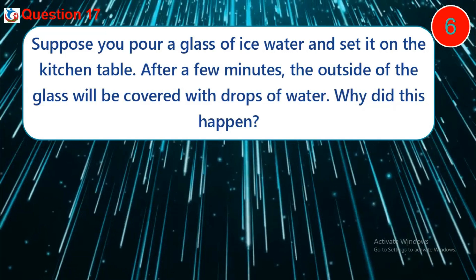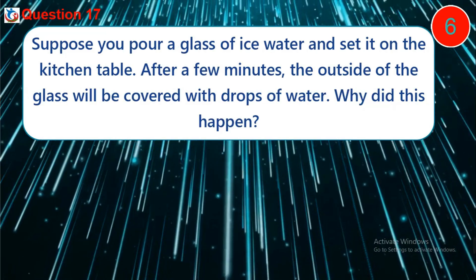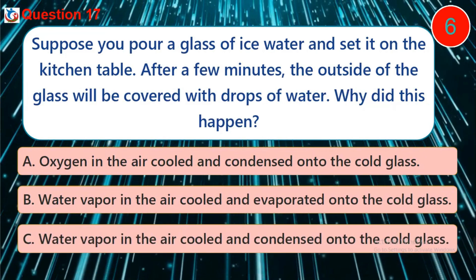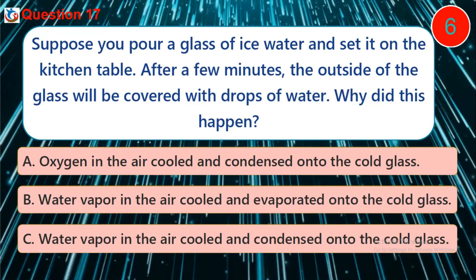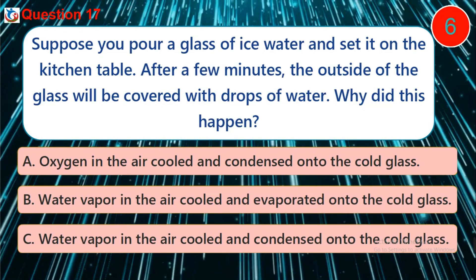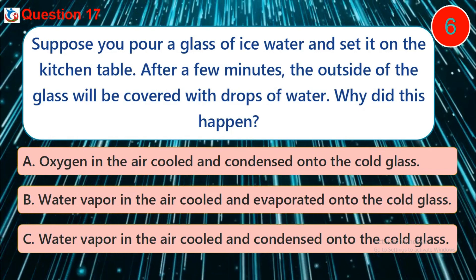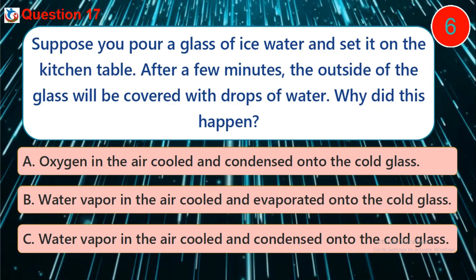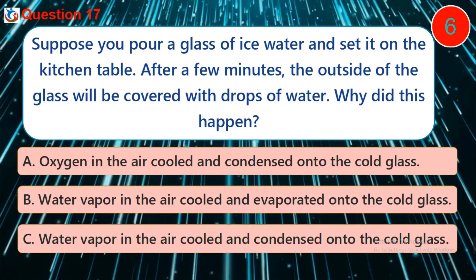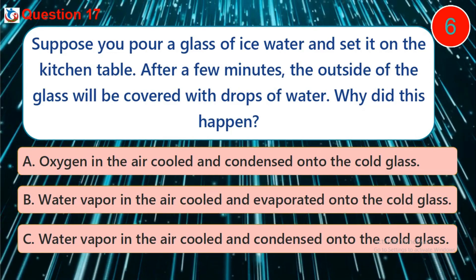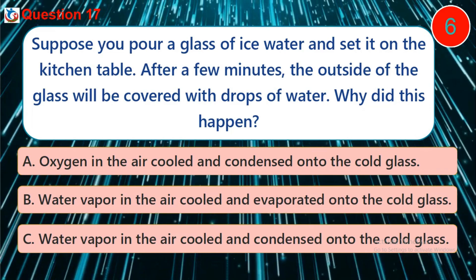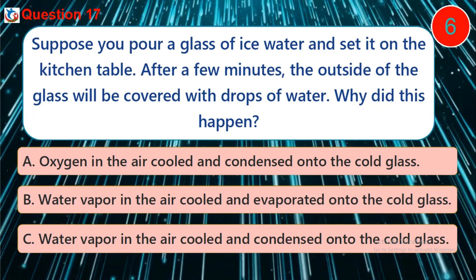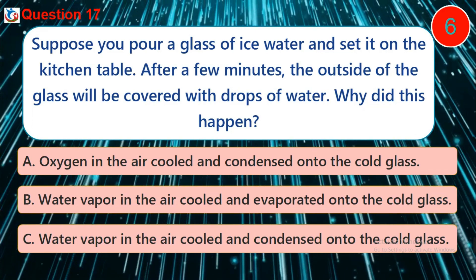Question 17. Suppose you pour a glass of ice water and set it on the kitchen table. After a few minutes, the outside of the glass will be covered with drops of water. Why did this happen? A. Oxygen in the air cooled and condensed on the cold glass. B. Water vapor in the air cooled and evaporated onto the cold glass. C. Water vapor in the air cooled and condensed onto the cold glass.